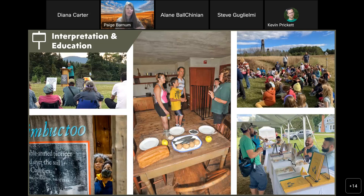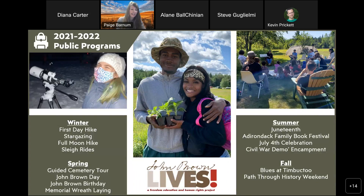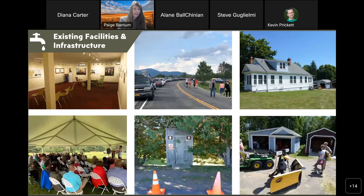At John Brown Farm there is tremendous opportunity to continue and expand interpretive and educational programs. It is paramount that these programs not only have relevance to today's social context but are engaging to audiences of all ages and accessible to everyone. The site is in regular communication with its official friends group, John Brown Lives, and other partners, allowing the site to host a variety of events throughout the year — including events commemorating the life of John Brown, talks promoting awareness of Adirondack wildlife, and cultural performances and art installations bringing attention to ongoing social injustices.